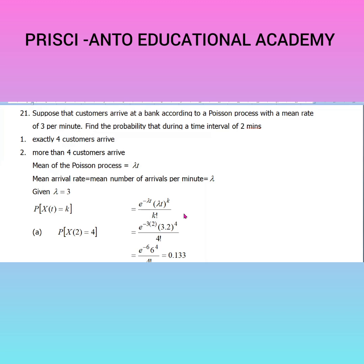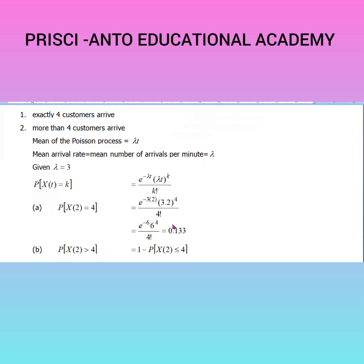Now we will solve the first subdivision — exactly four customers arrive. So, the probability that X(2) equals 4 is: e to the power of minus lambda*t, where lambda*t equals 3 times 2 equals 6, so e to the power minus 6, times 6 to the power 4, divided by 4 factorial. Using the calculator, the answer is 0.133.